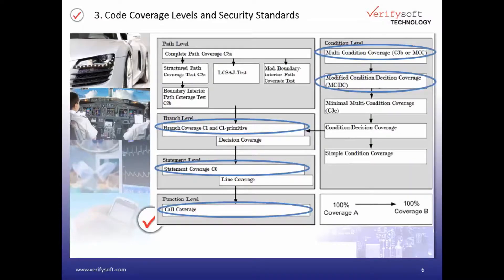Now let's have a look at the different coverage levels. At the bottom left we have the function level — 100% function or call coverage is achieved when each function has been executed at least one time. This is a very low coverage level. Above this we have statement coverage, where all different statements within the function need to be tested. And more detailed still is branch coverage.